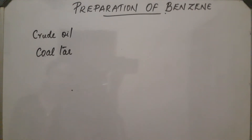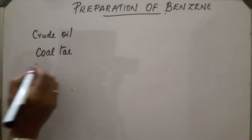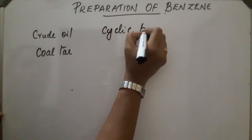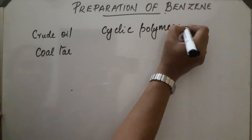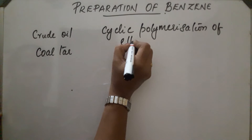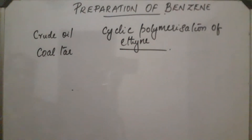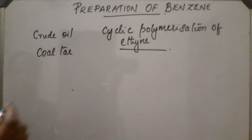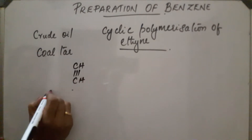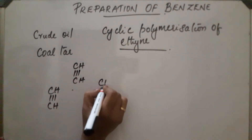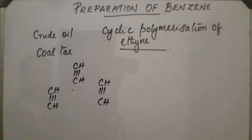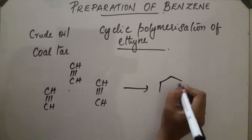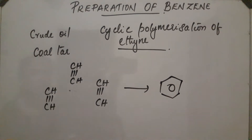The first method of preparation of benzene is cyclic polymerization of ethyne, which we already discussed under the topic alkynes. Three molecules of ethyne — CH triple bond CH — undergo cyclic polymerization to form benzene.